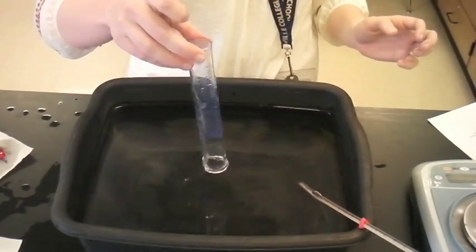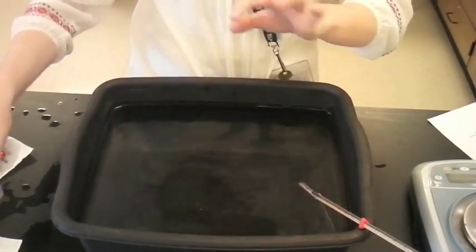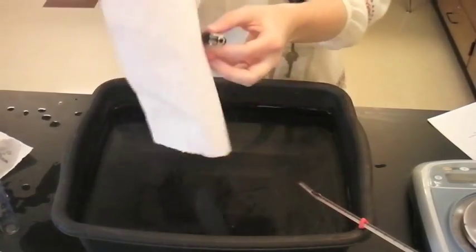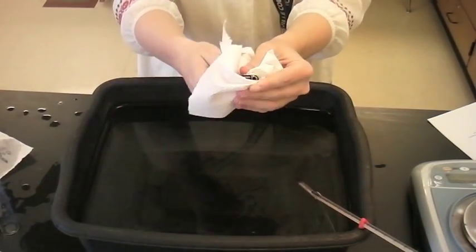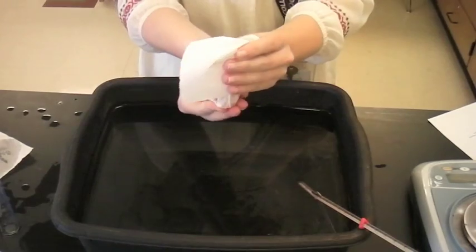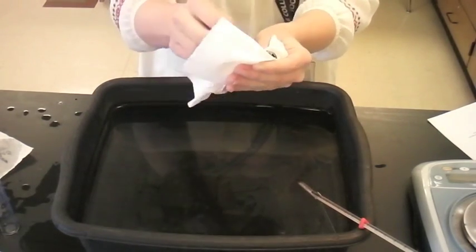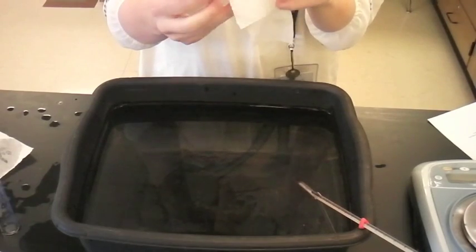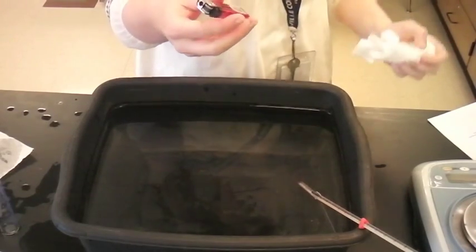Now, I'm going to release this and now the last thing we need to do is we need to dry off our lighter so that we can get how much butane we actually used. We measured it before placing it under the graduated cylinder and now we're going to do it after.